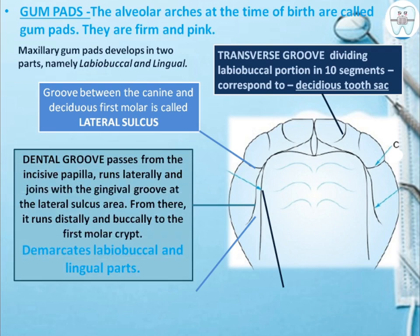The dental groove separates or defines the labio-buccal and lingual parts. It passes from the incisive papilla, then runs laterally and joins with the gingival groove at the lateral sulcus area, from where it runs distally and buccally to the first molar crypt.